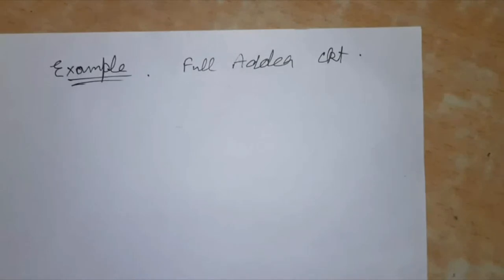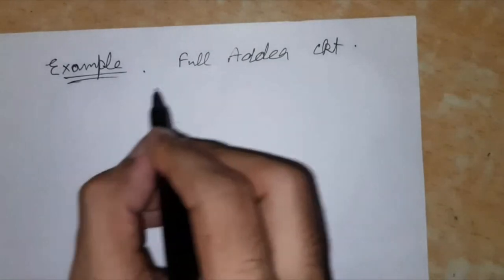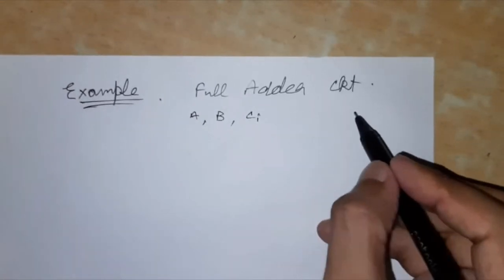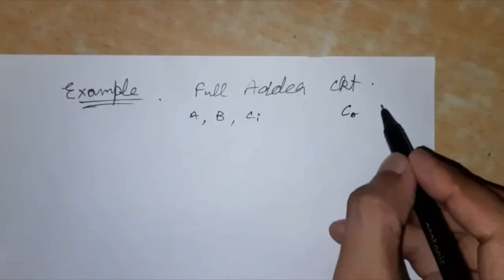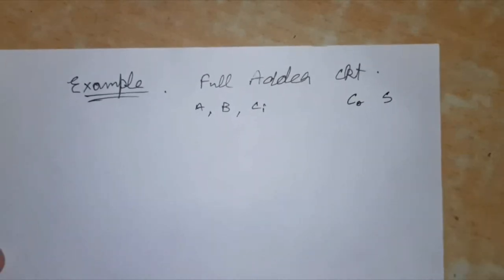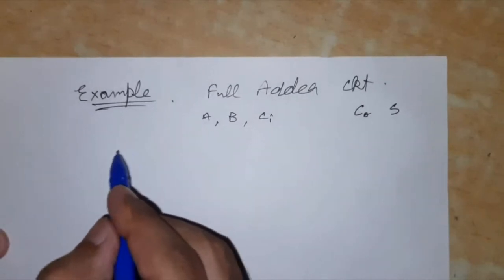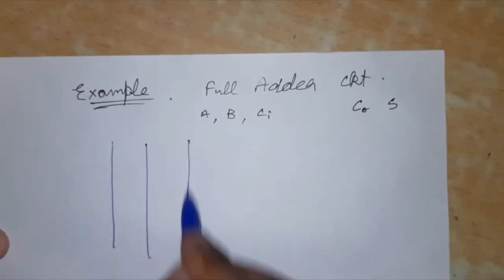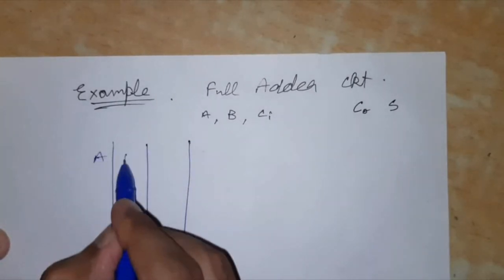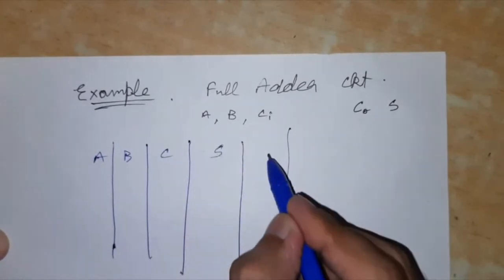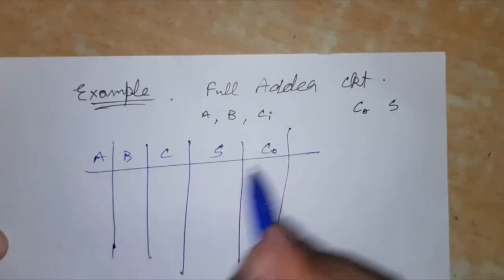So we shall have three inputs: A, B, and C input, and two outputs: C out and S for sum. So we shall construct a truth table that will be A, B, C and for the two outputs that is S and C out.